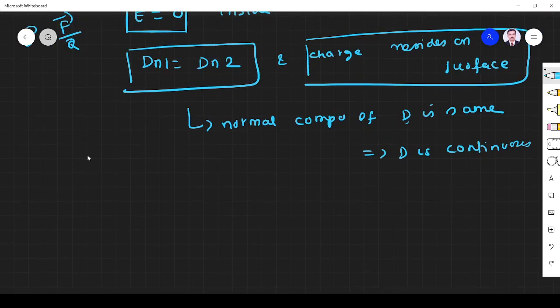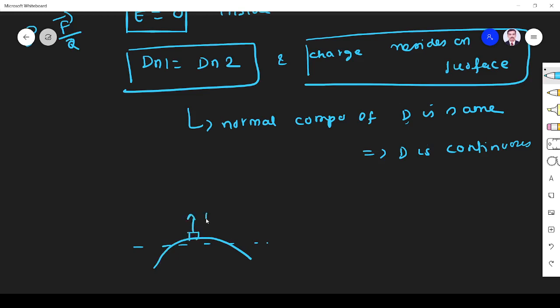As per Gauss law, suppose we have a water surface like this and conductor like this. We know normal component will be perpendicular. This is dN2, let us assume dN1. Both are the same. It is outside the surface, it is inside the surface. The normal component will be the same.